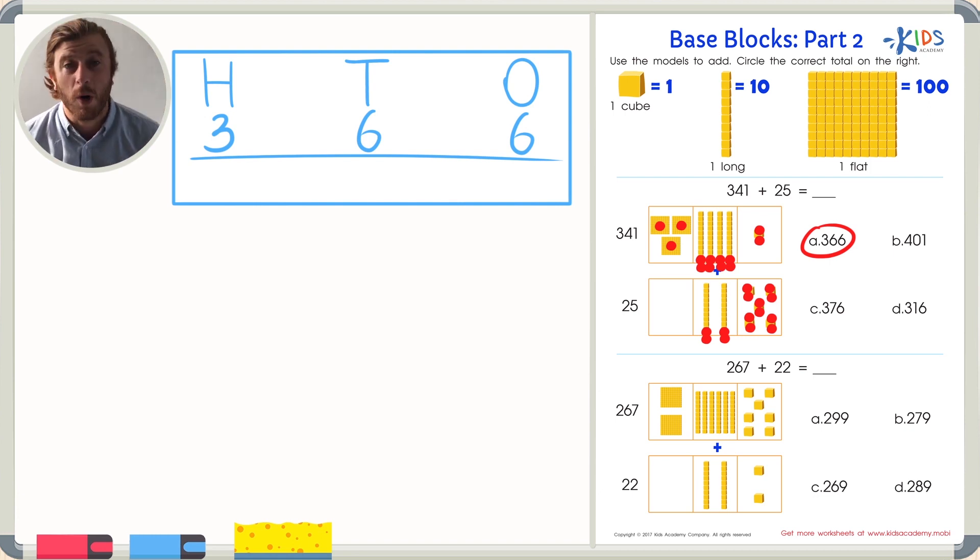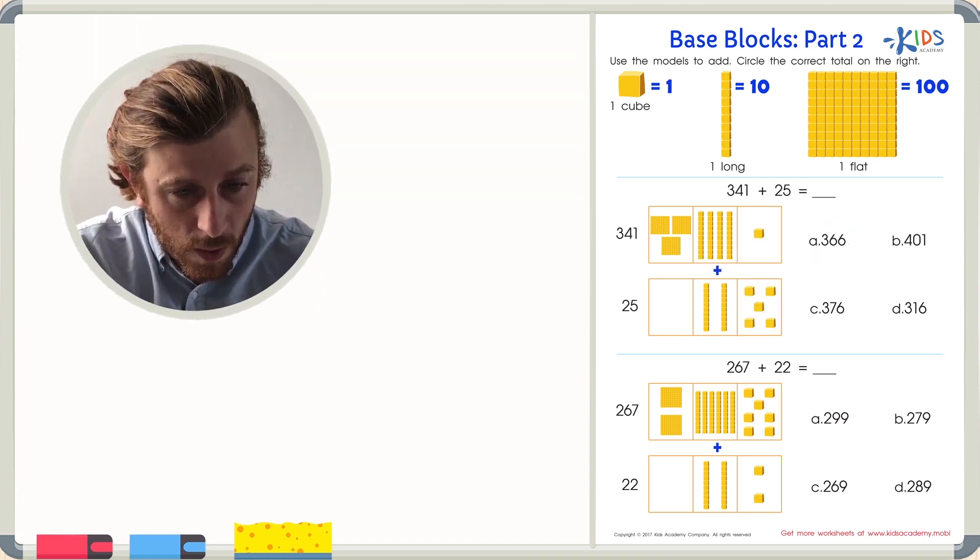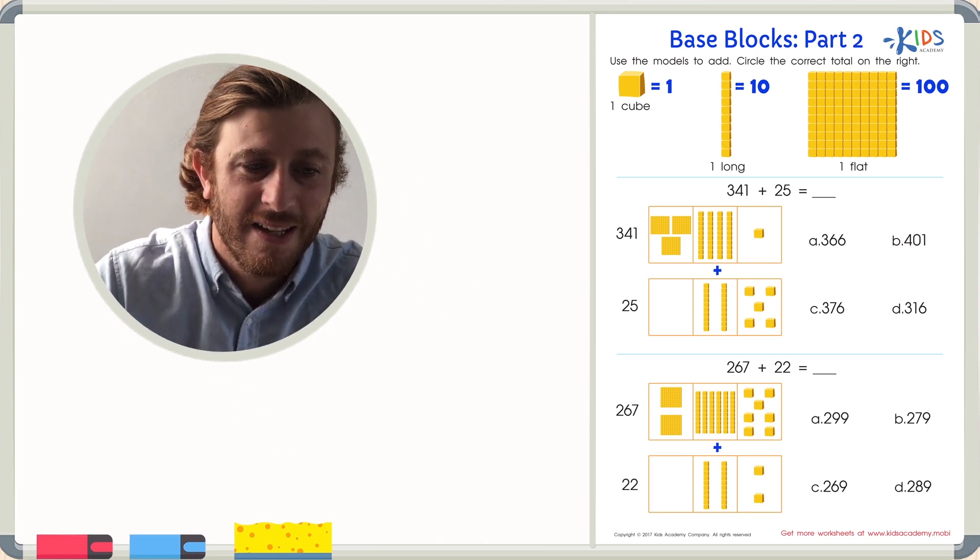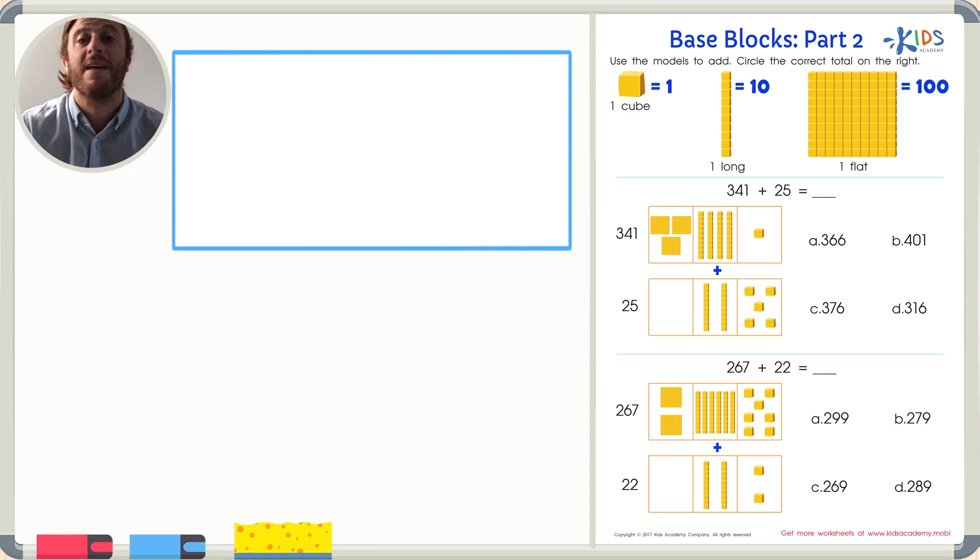Whoa, whoa, whoa. Let's check our work to make sure 366 is really the correct answer. One way to check our work using place value is to write the value of each place. Let's make that handy place value chart again. Start with O for the ones place, T for the tens place, and H for the hundreds place. Now let's count them again. One, two, three, four, five, and six. There are six ones. And one cube is equal to just one. So six ones equal to six.